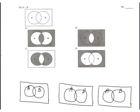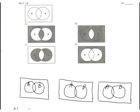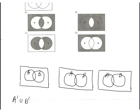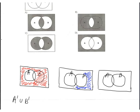Problem 30: find A complement union B complement. Again, A complement is completely outside A. This is A complement. B complement is outside B. This is B complement.